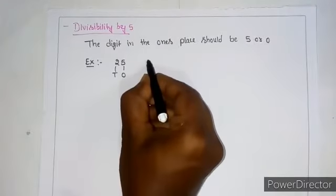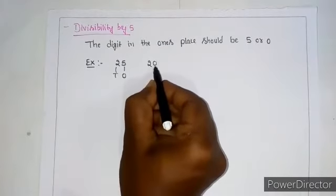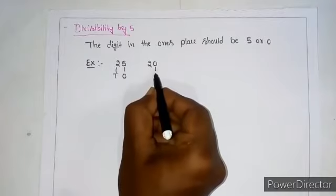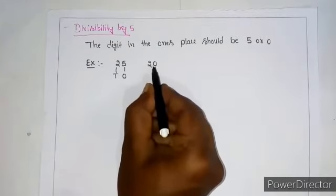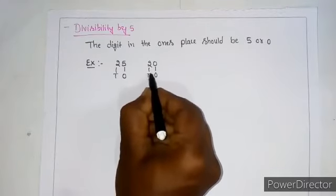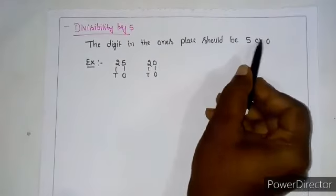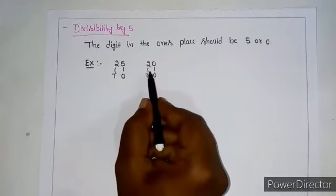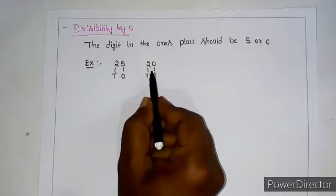Another example, if you take 20. In 1's place, 0 is there and in 10's place, 2 is there. Since 0 is in 1's place, this number is divisible by 5. 5 times 4 is 20.